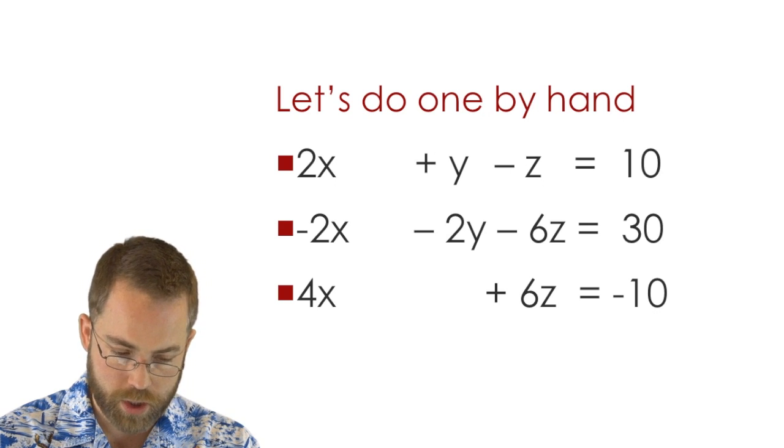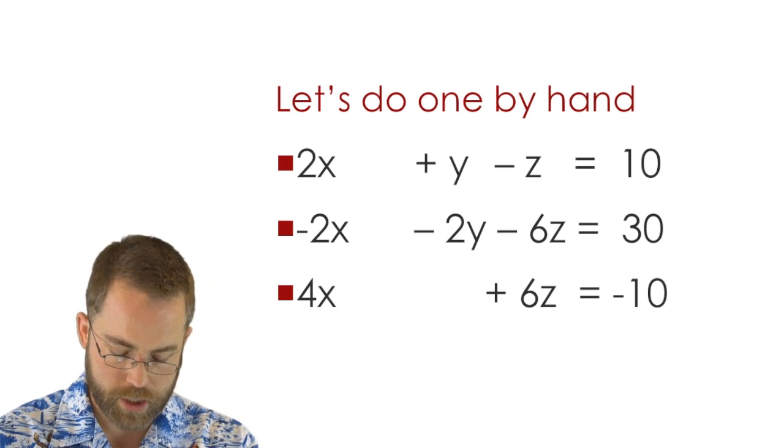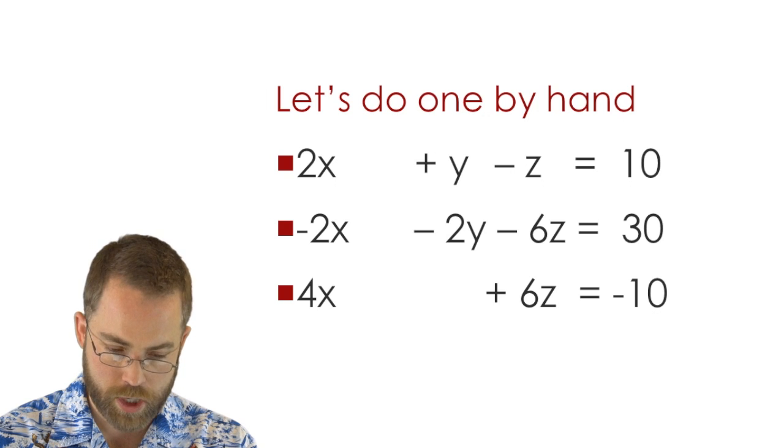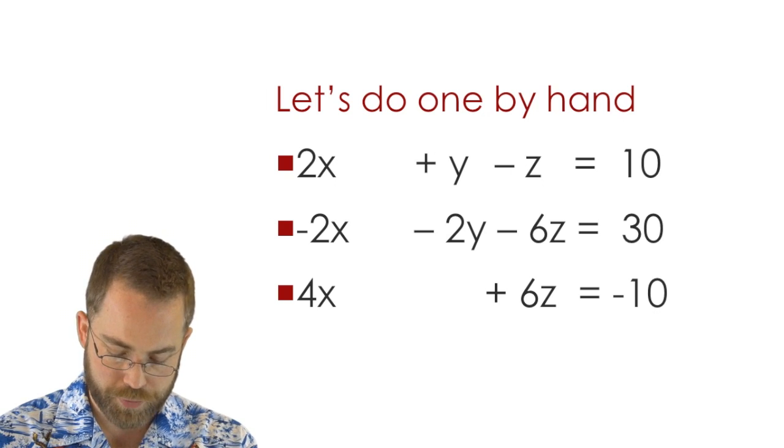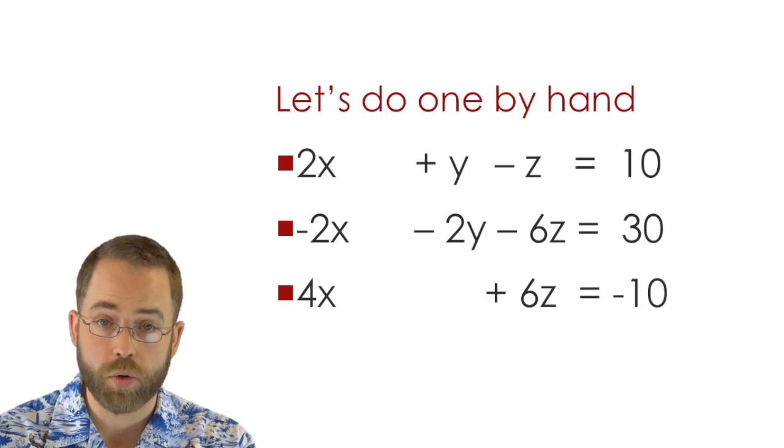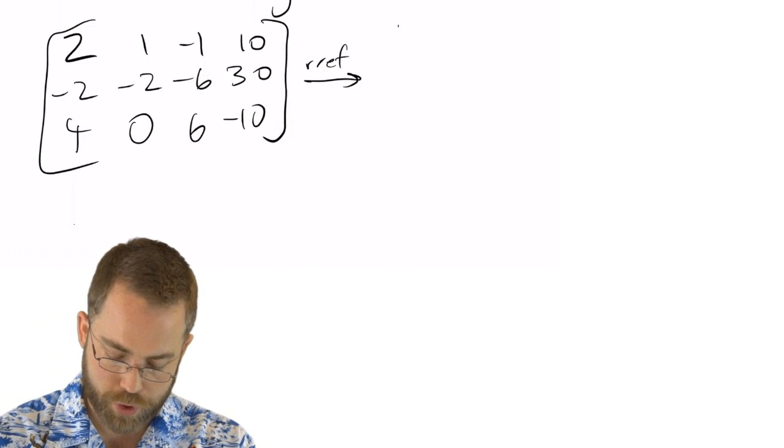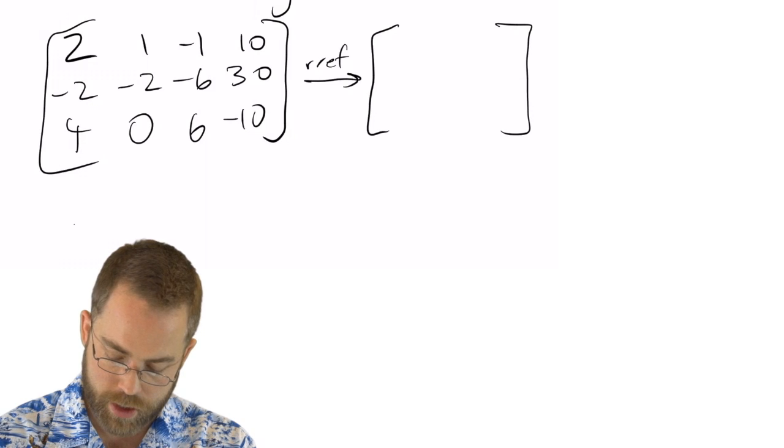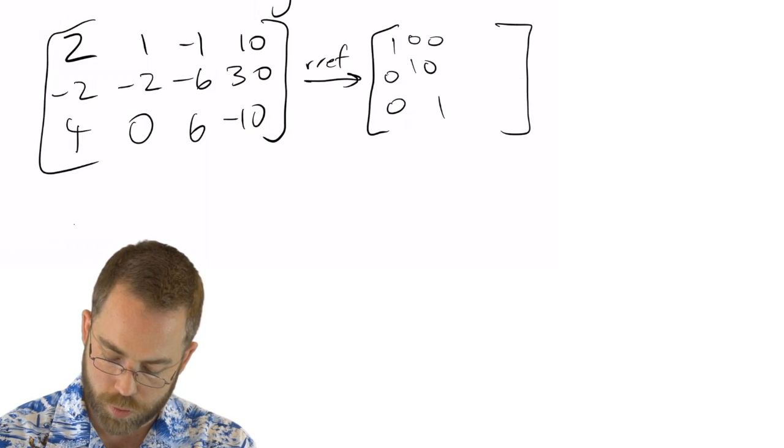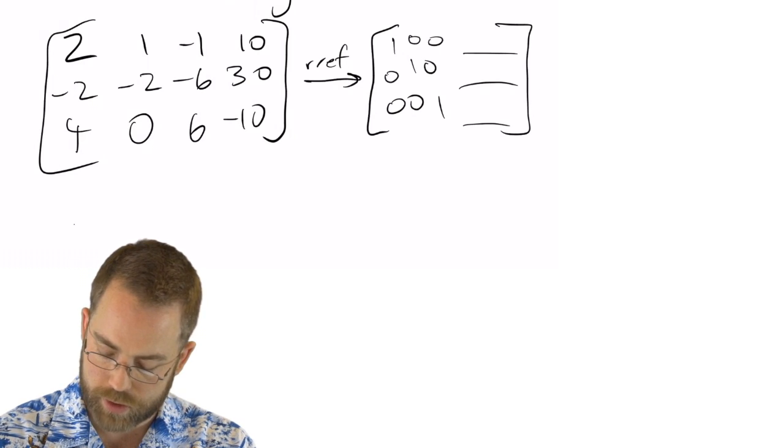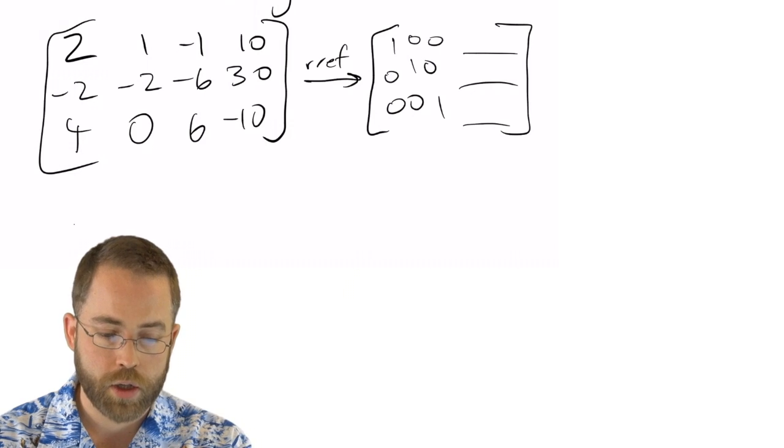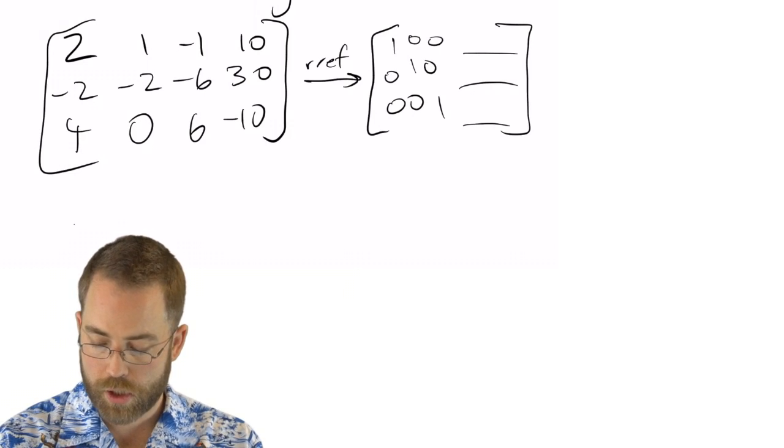I'm going to say 2, 1, negative 1, 10, negative 2, negative 2, negative 6, 30, 4, 0, 6, negative 10. So again, that if I put all that into the calculator and I RREF it, it's going to come back with something that's got ones on the diagonal, zeros everywhere else, except it's going to give me what x and y and z are equal to.